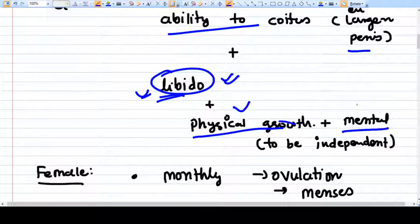What nature wants is that the person should now be independent. Physical growth is required because the child cannot survive independently, so now the person becomes an adult who is able to survive independently.